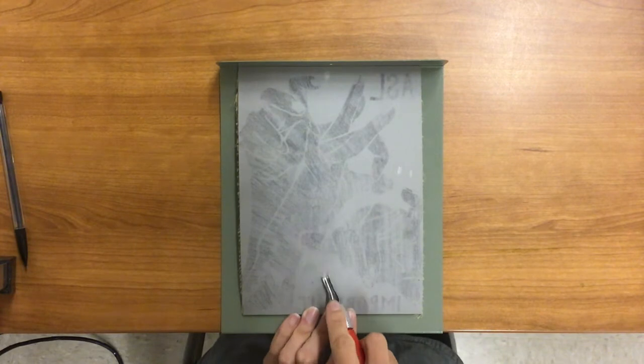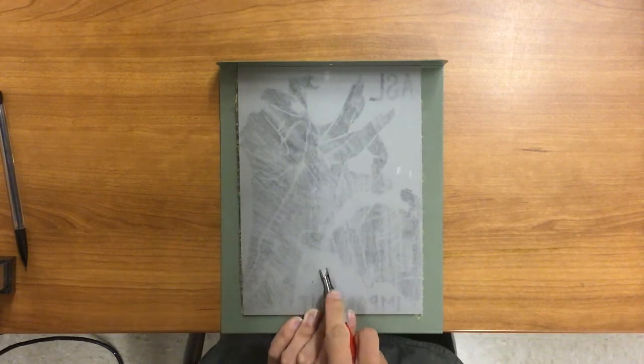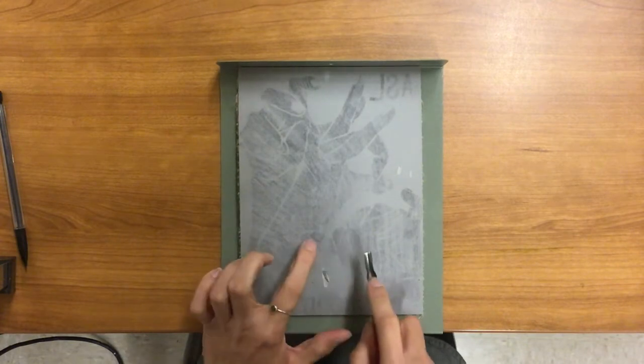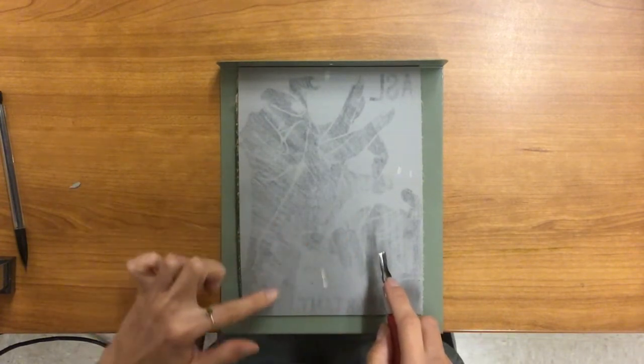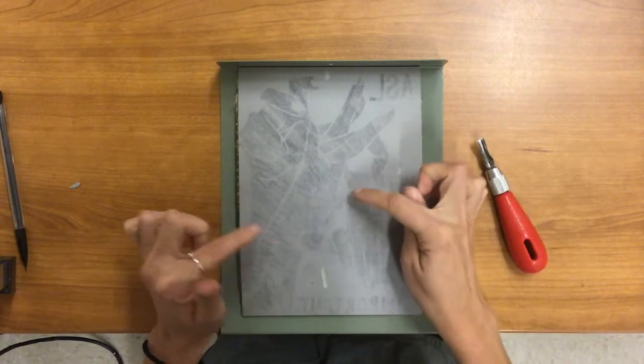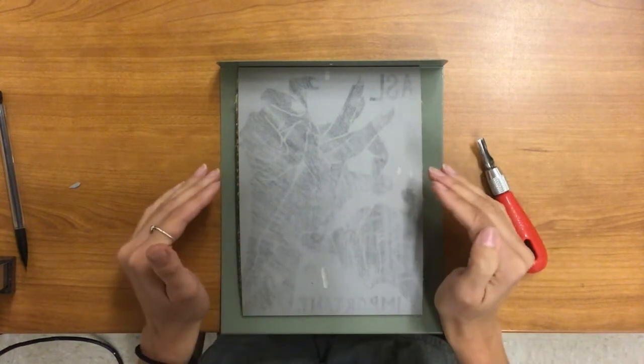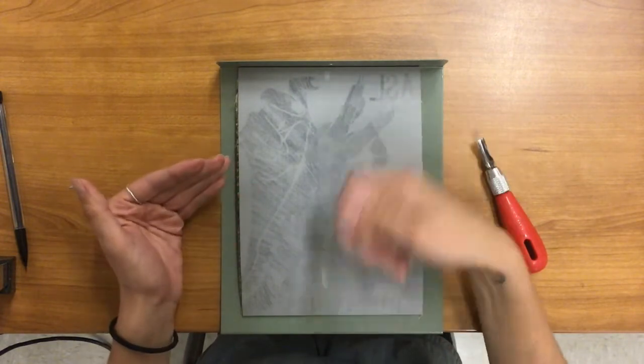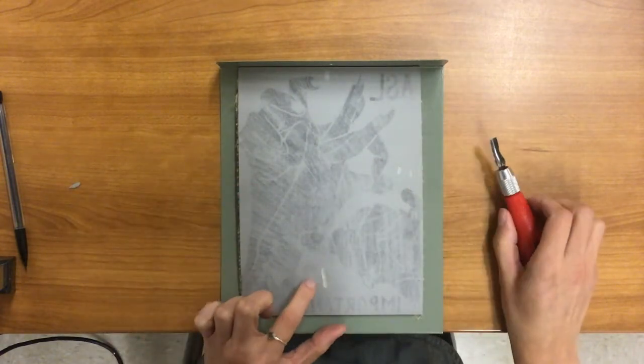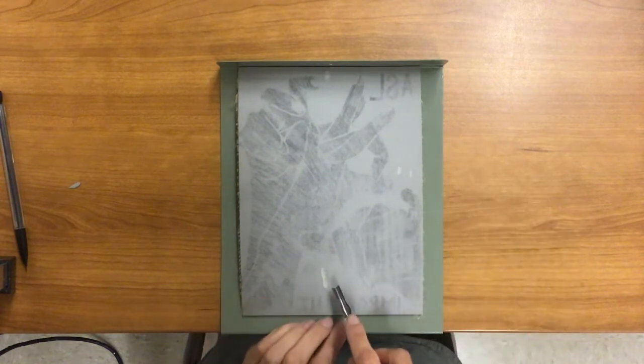So always have your hand behind the direction that you're moving and always make sure you're moving slowly and carefully, paying attention to where your black imagery is. Whatever is black, you don't carve it away, because what is black is what you want to show up black when you go to print. So anything that's this light gray, you can go ahead and carve that away.